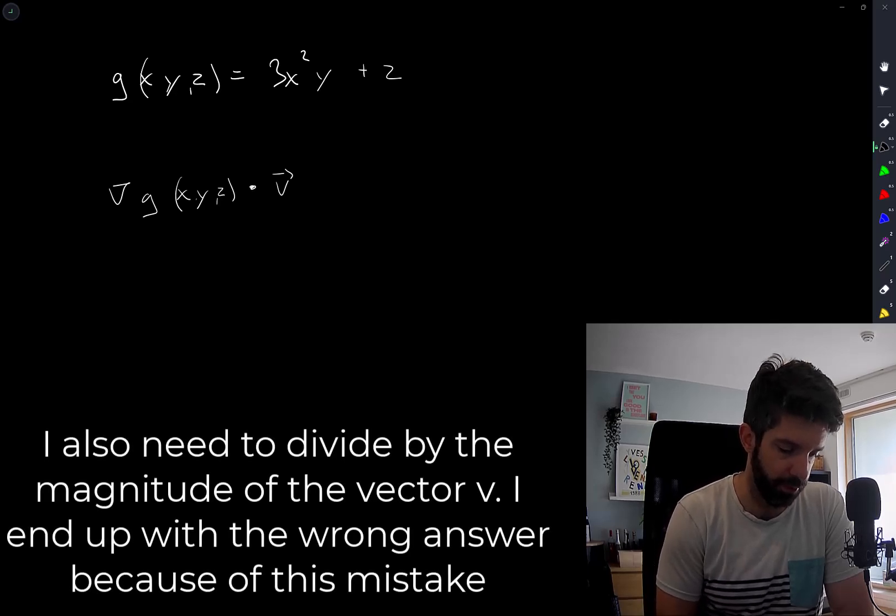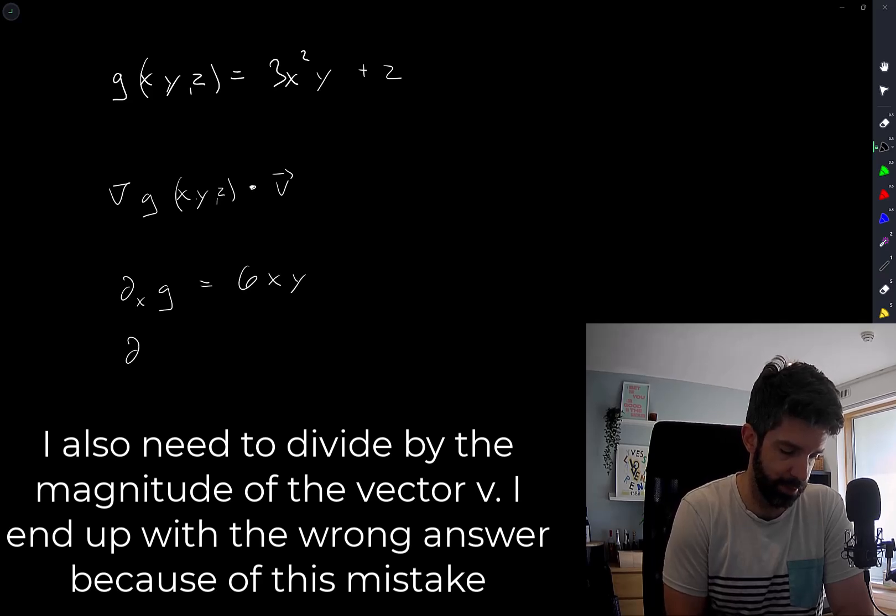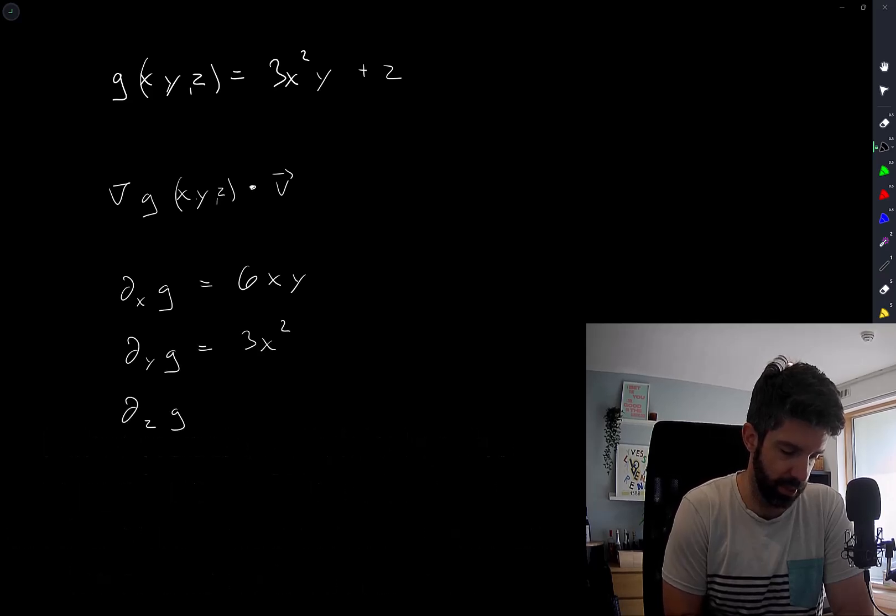So first, let's compute the gradient of g. We have the partial in the x direction is equal to 6xy. The partial in the y direction is equal to 3x squared. And the partial in the z direction is equal to 1.